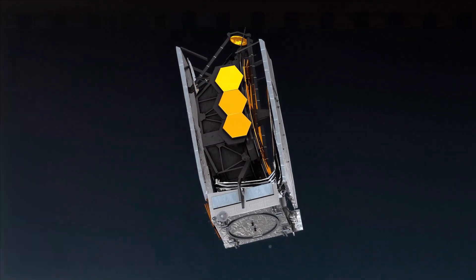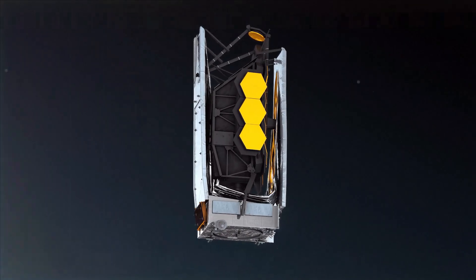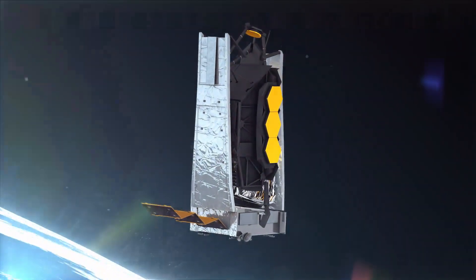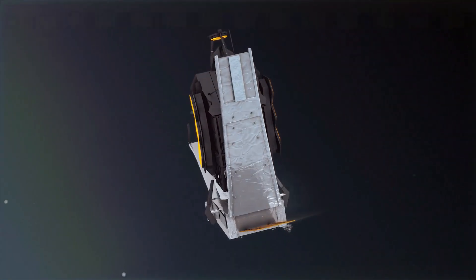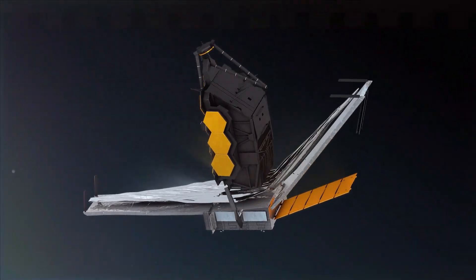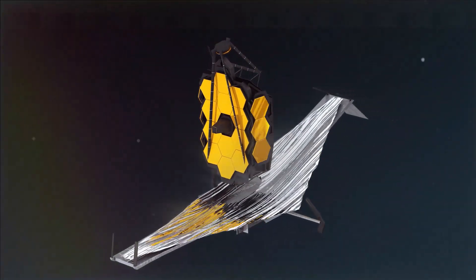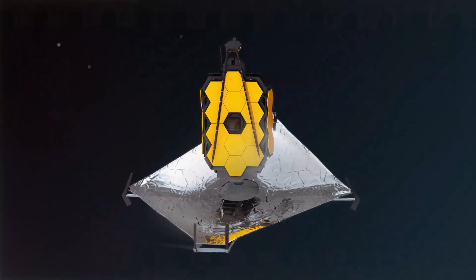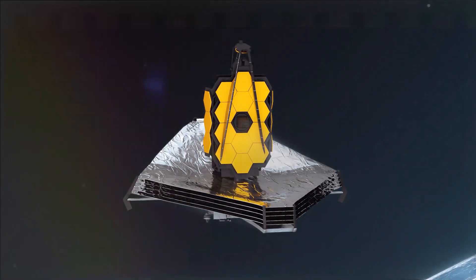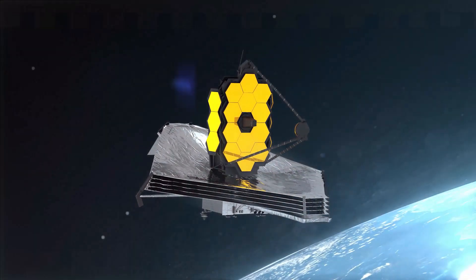The James Webb telescope has made a significant discovery about the Betelgeuse supernova. According to new data from the telescope, Betelgeuse is not actually about to explode as a supernova in 2023, as previously thought. Instead, the star is undergoing a period of increased dimming, which is likely due to the ejection of dust and other material into space.